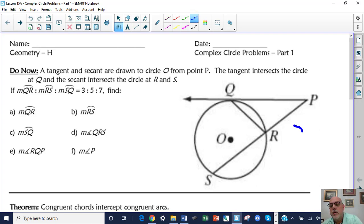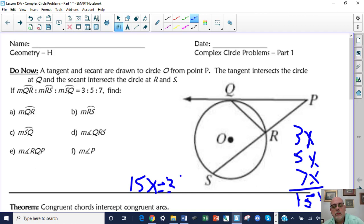So we have 3x, 5x, and 7x. You add them up and you get 15x. So then 15x equals 360. I maybe should have typed this. So x equals 24.